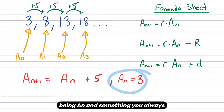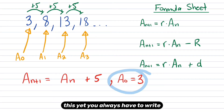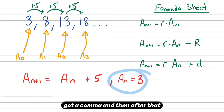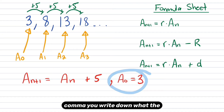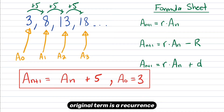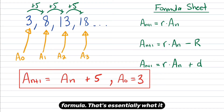Something you always have to do with a recurrence relation is write a0 at the end. You generally write a comma, and then after that comma, you write down what the original term is. A recurrence relation is just a way to represent a sequence of numbers using a formula — that's essentially what it is in layman's terms.